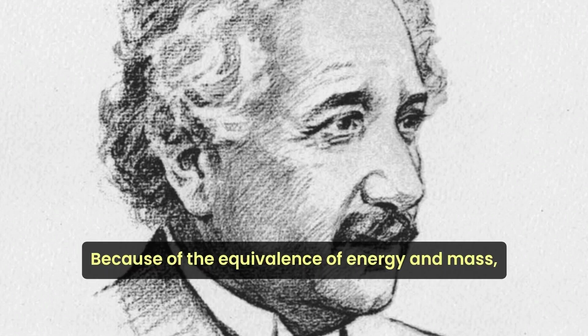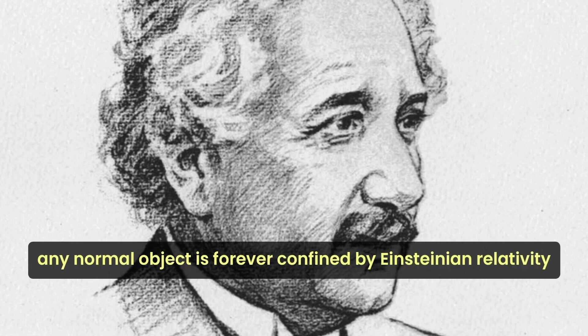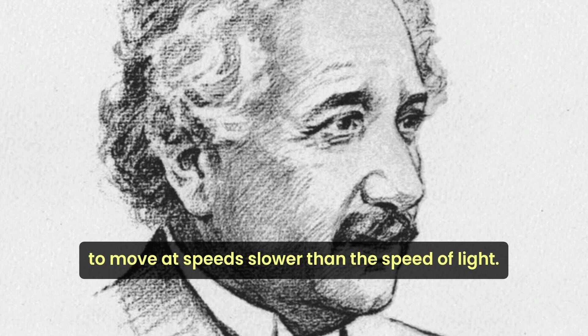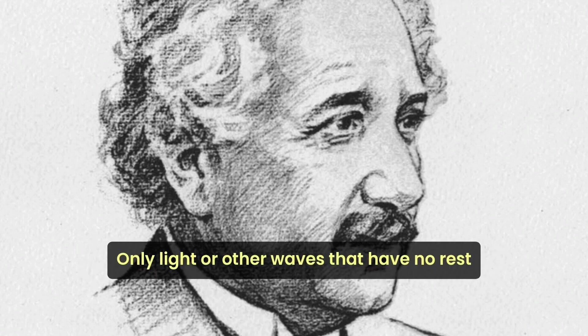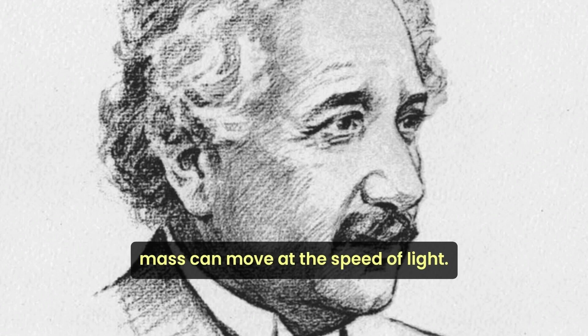Because of the equivalence of energy and mass, any normal object is forever confined by Einsteinian relativity to move at speeds slower than the speed of light. Only light or other waves that have no rest mass can move at the speed of light.